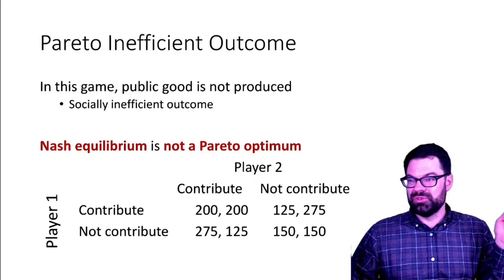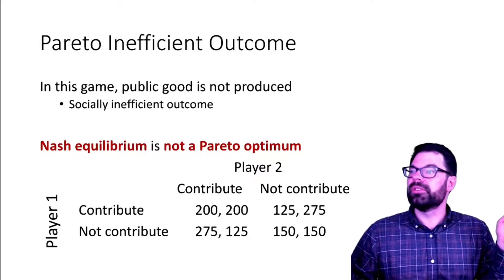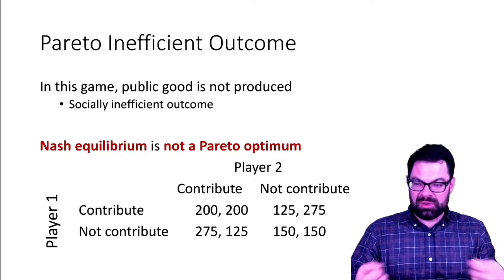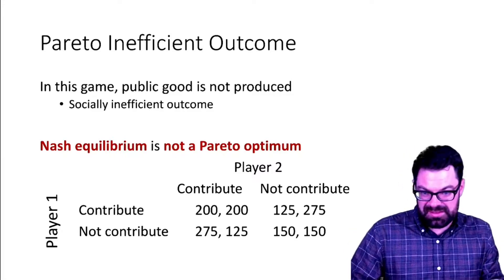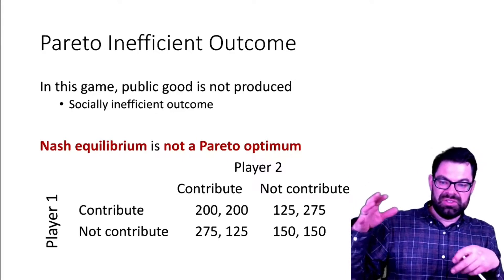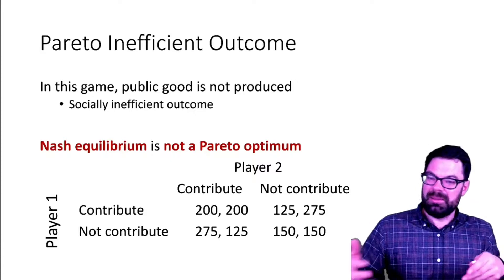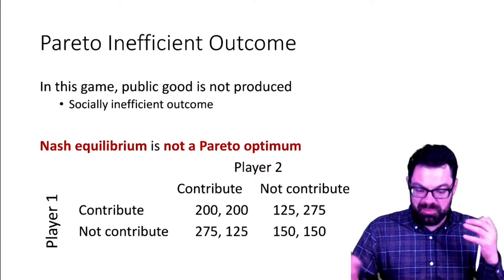We simply provide the public good and collect taxes to finance it. That brings us then to the equilibrium where everyone contributes. They may not contribute voluntarily but they contribute.